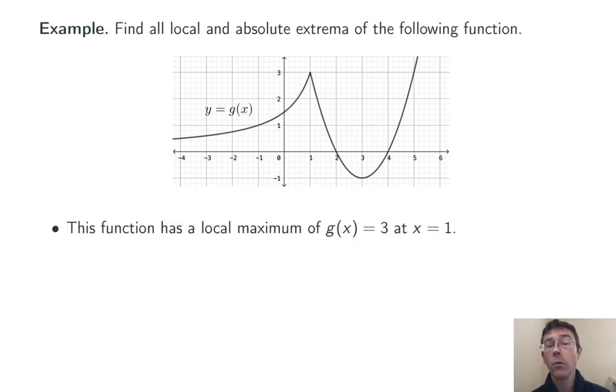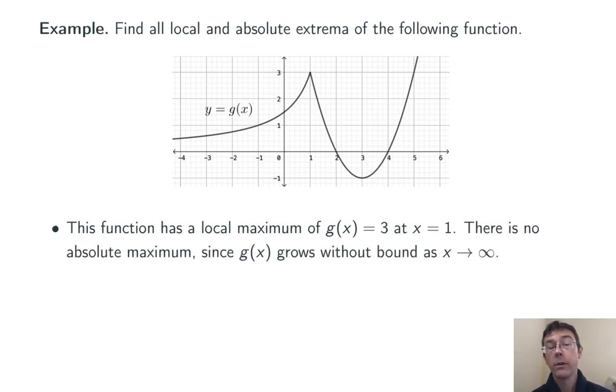So the function has a local maximum of 3 at the value x equals 1. That's at that cusp sort of in the middle of the graph. Nearby x equals 1, the graph only gets smaller. However, this function does not have an absolute maximum. This function grows without bound as x gets bigger and bigger to the right.